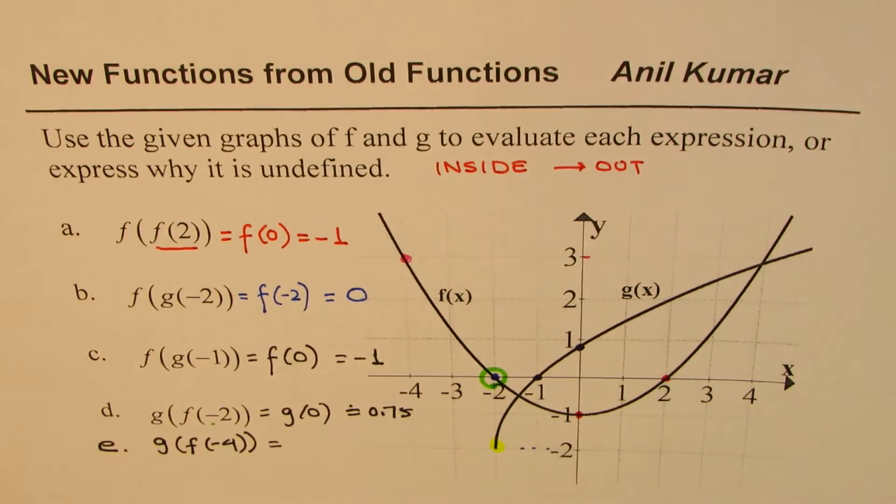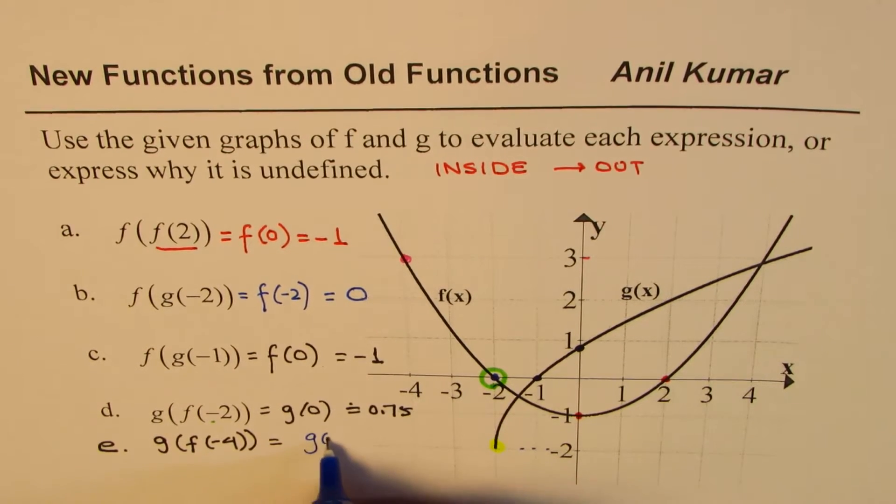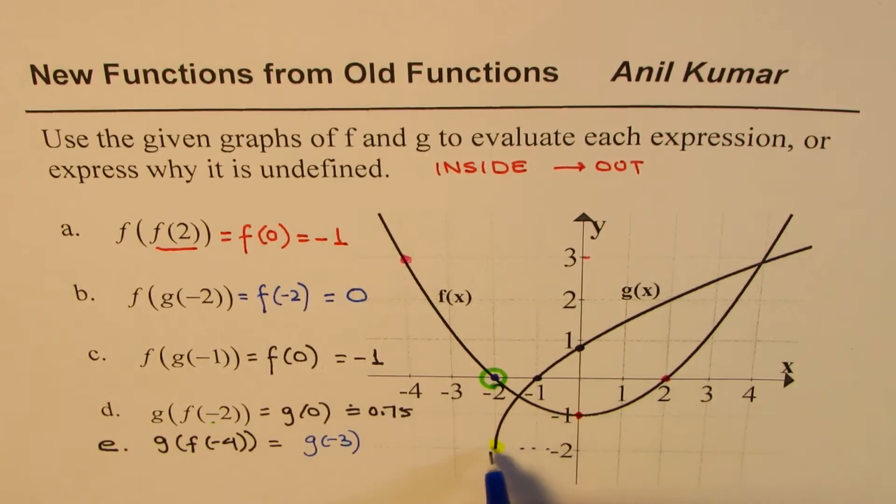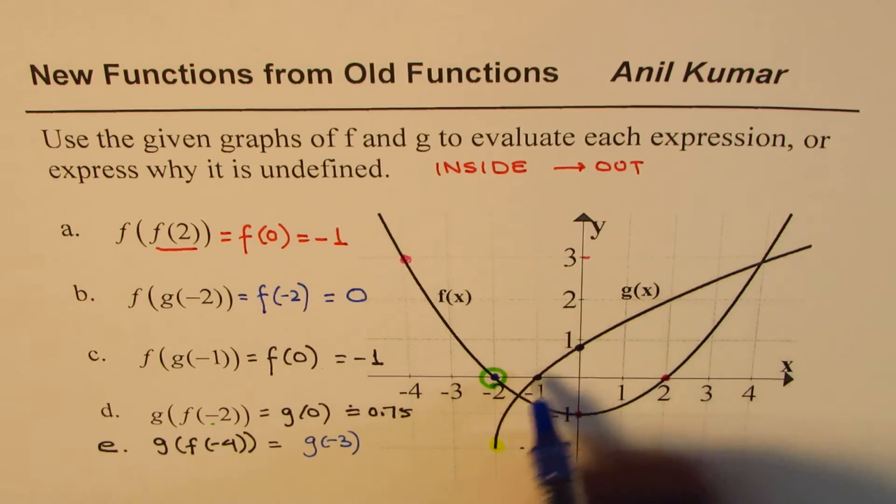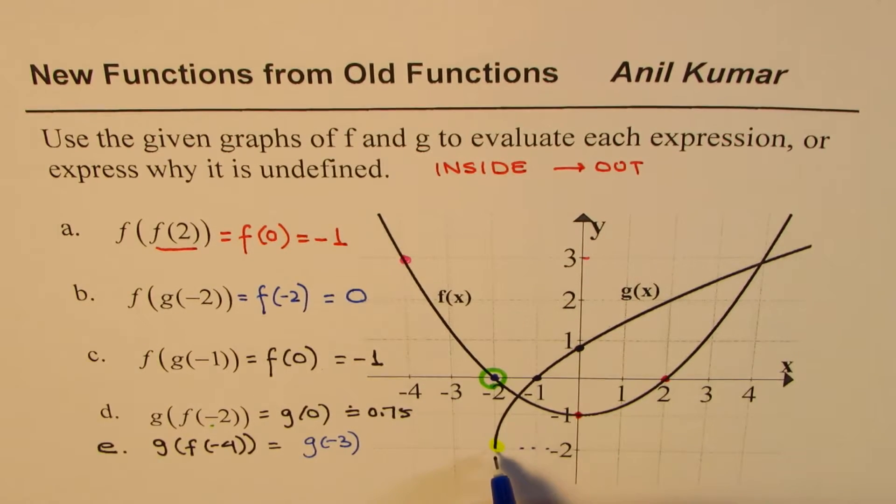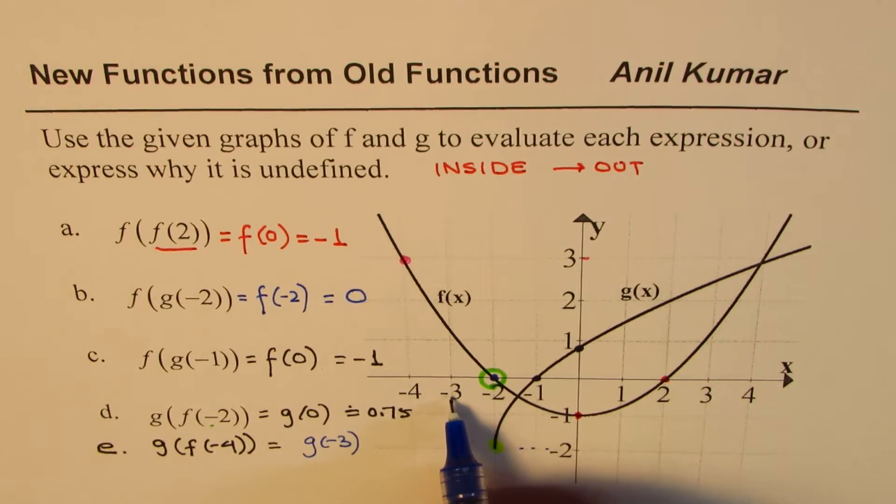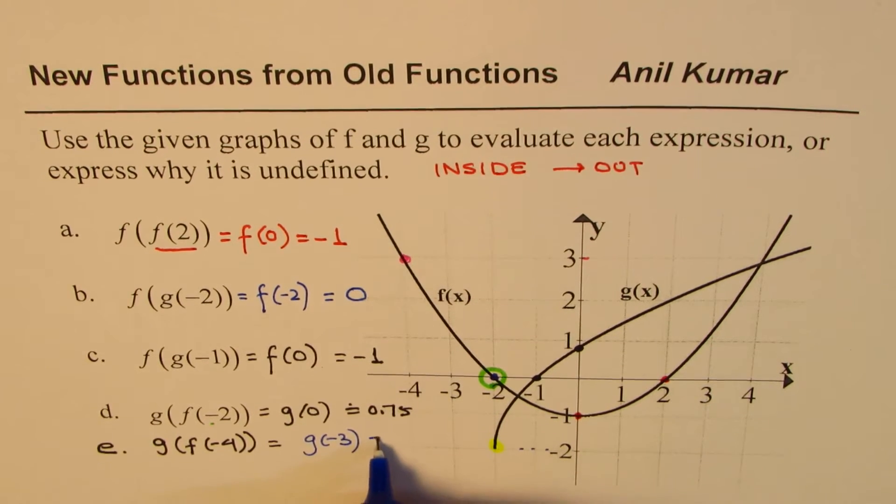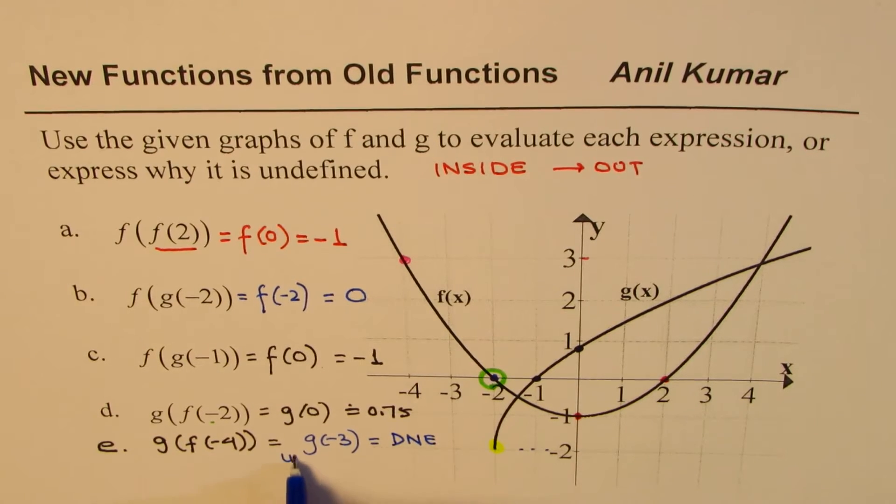So I could write this as equal to g(3). Now this square root function is only defined in the domain greater than or equal to -2. It is not defined at 3. So the answer for this is that it does not exist. It is undefined.